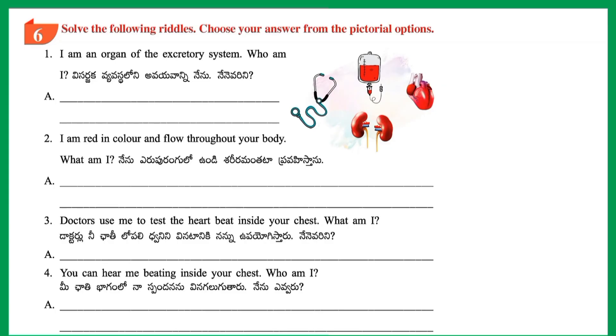Riddle 1: I am an organ of the excretory system. Who am I? Answer: Kidneys.